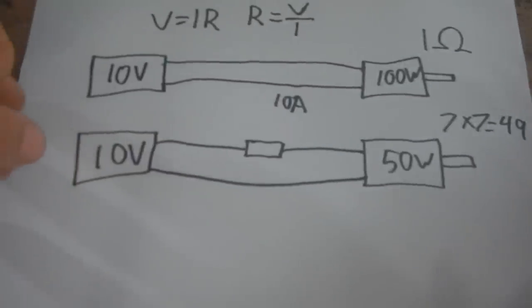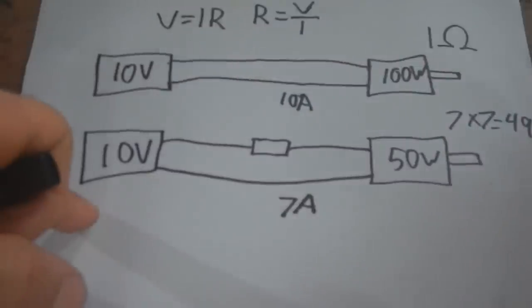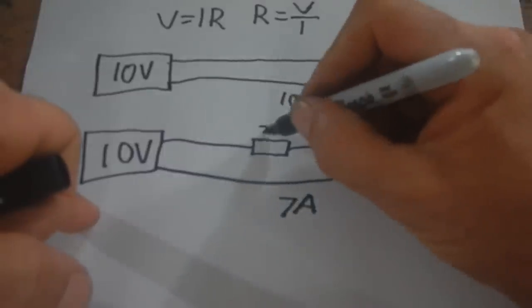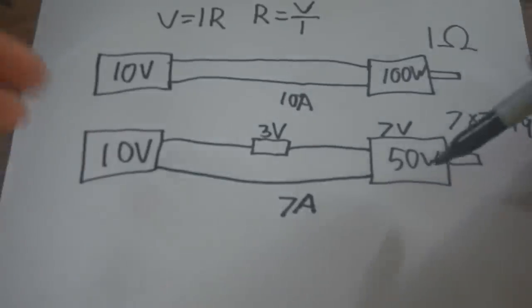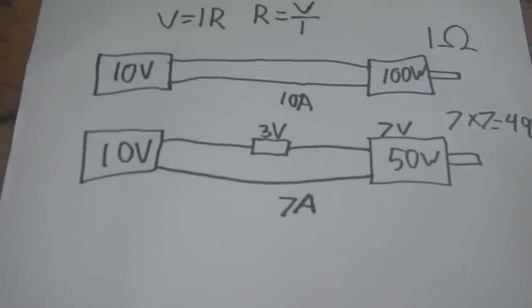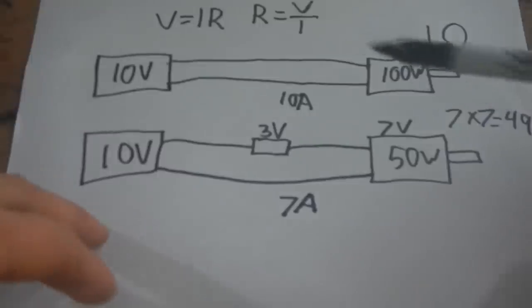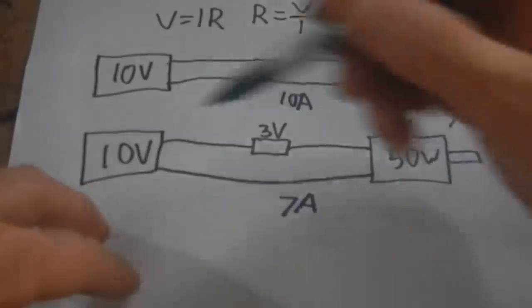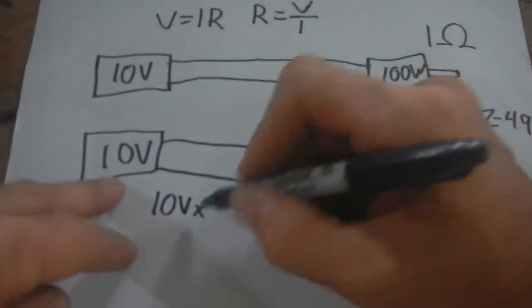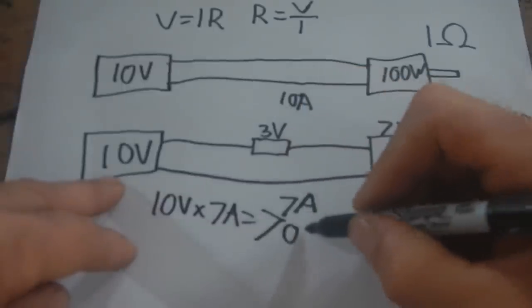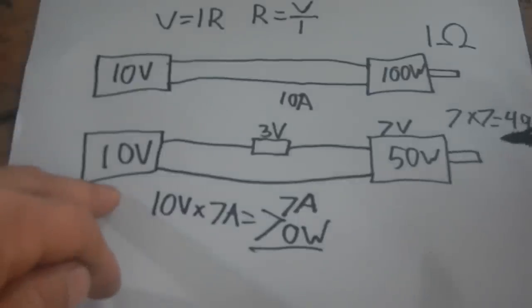We need 7 amps running through this whole circuit and 7 volts hitting the motor. That means we have to waste 3 volts on the resistor. So we make this resistor 3/7 of what this resistance is—since this is 1 ohm, this ends up being 3/7 of an ohm. How much energy is actually being wasted by this resistor? We know 50 is going into the motor. Let's see how much is coming out of the battery: 10 volts times 7 amps equals 70 watts. So only 70 watts are coming out of the battery and 50 are making it to the motor.